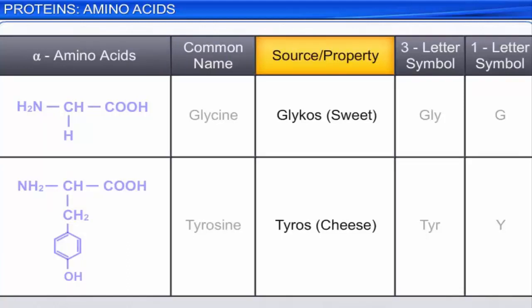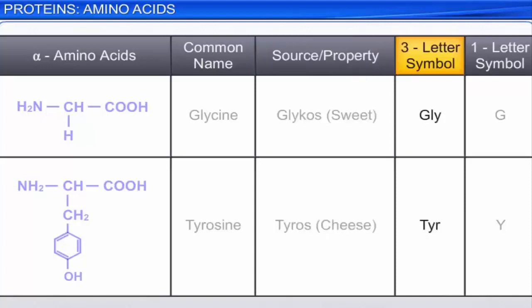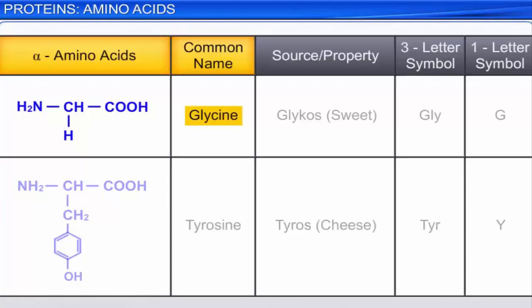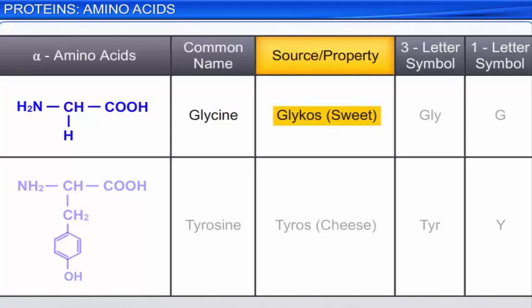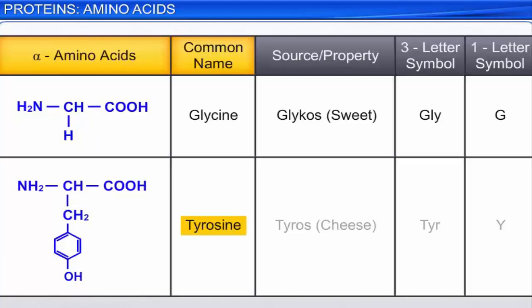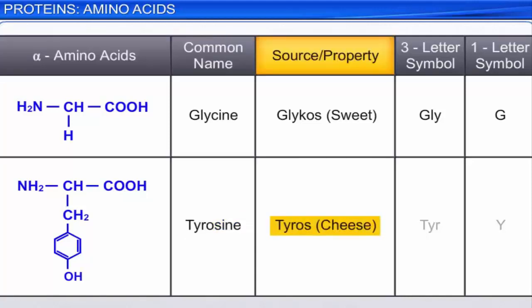Every alpha amino acid has a common name. These common names reflect either the source or the property of that compound. Alpha amino acids are usually represented by a three letter symbol, and sometimes by a one letter symbol. For example, the amino acid glycine has a sweet taste; its name is derived from the Greek word glycos, which means sweet. The three-letter code for glycine is GLY, and its one-letter symbol is G. The side chain of glycine is a hydrogen atom. The amino acid tyrosine was first obtained from cheese; its name is derived from the Greek word tyros, which means cheese. The side chain for tyrosine contains an aromatic phenol group. It has the three-letter symbol TYR and its one-letter symbol is Y.